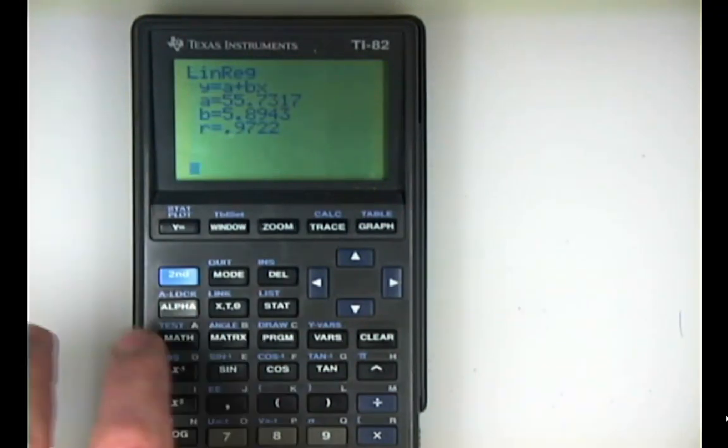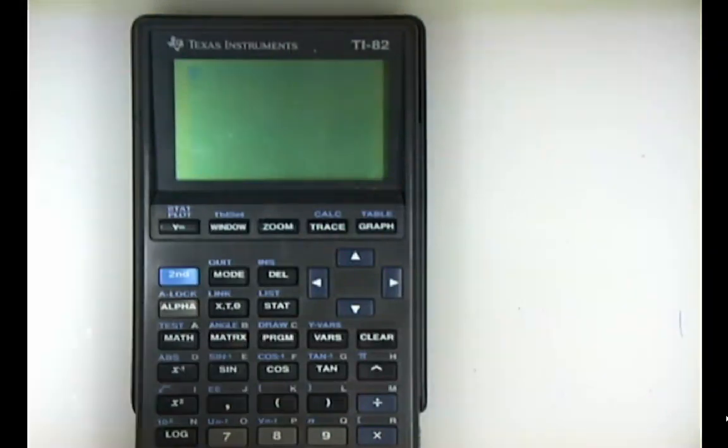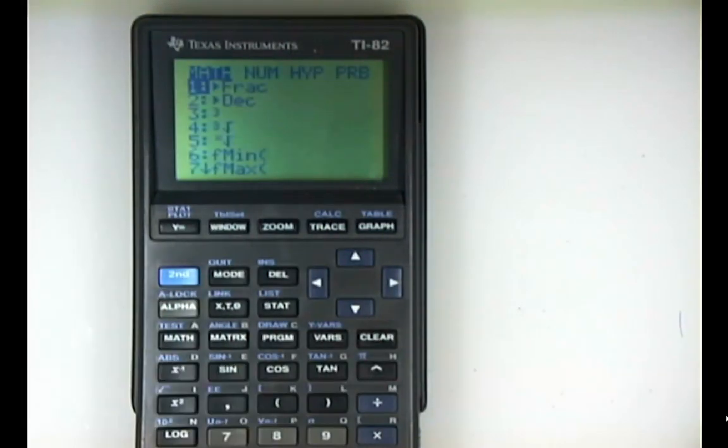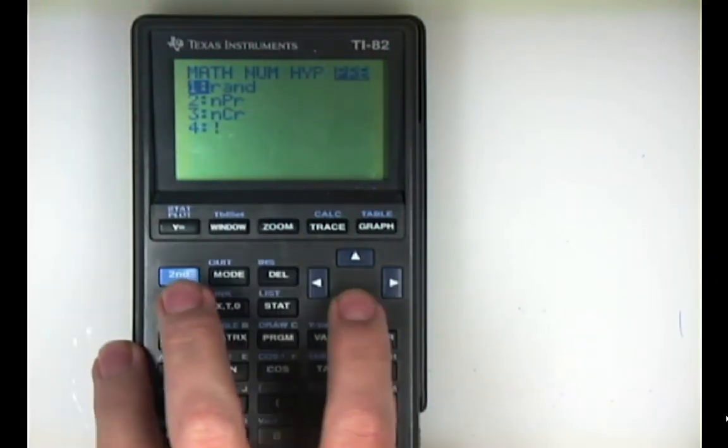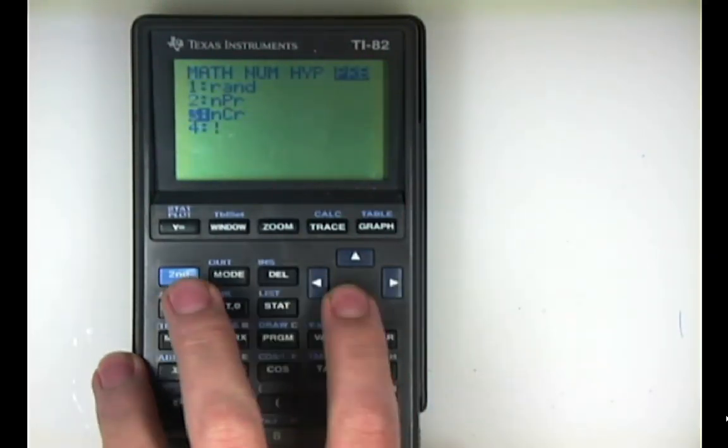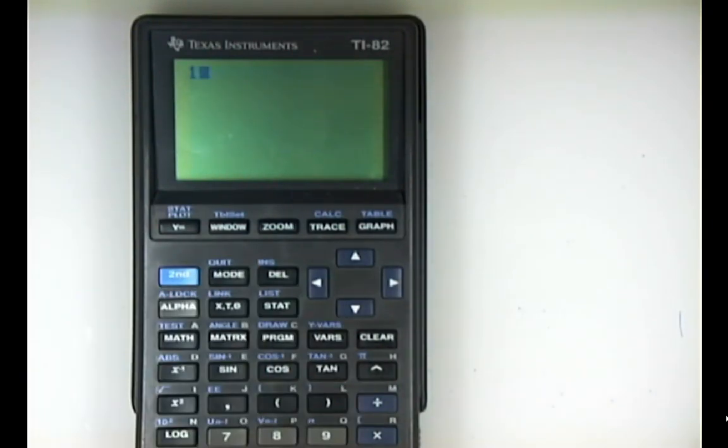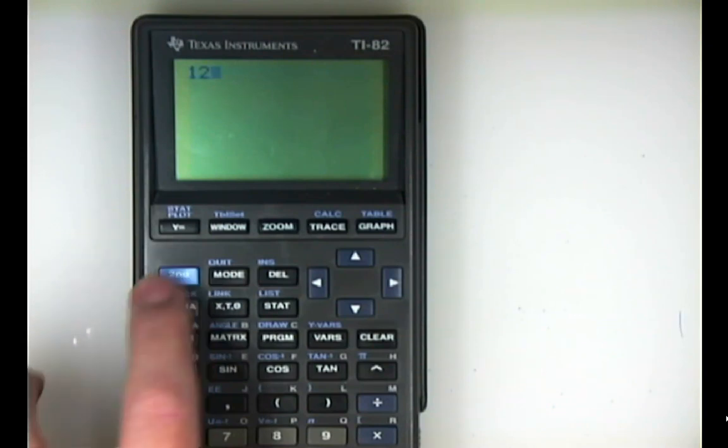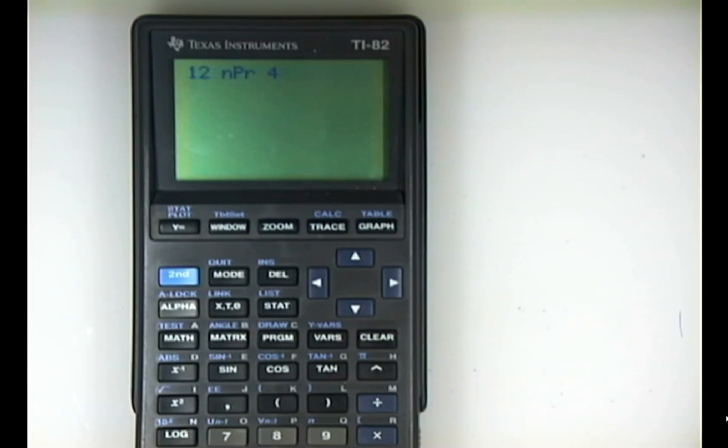Combinations are hidden in its math menu and its PRB menu. If you needed to do a permutation or a combination or maybe a factorial, you can do that with this. If you wanted to do 12 and then permutate maybe four items from it, it can handle that. You have to enter the n first, then the command, and then the r value.